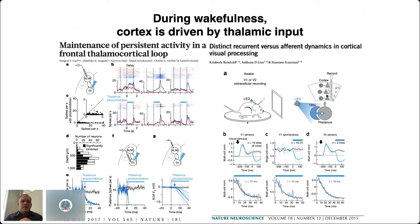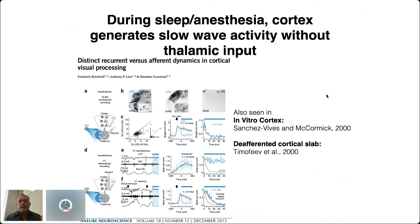During wakefulness, cortex is really driven by thalamic input. Two distinct studies basically silenced the thalamus in awake mice, and they saw that within 10 milliseconds of silencing the thalamus, the corresponding area of cortex basically goes silent — during wakefulness, without that thalamic drive, there's no activity in cortex. However, if the animal is asleep or anesthetized, the cortex actually starts to generate these low-frequency oscillations and sleep rhythms all on its own — it doesn't require thalamic input to generate activity.